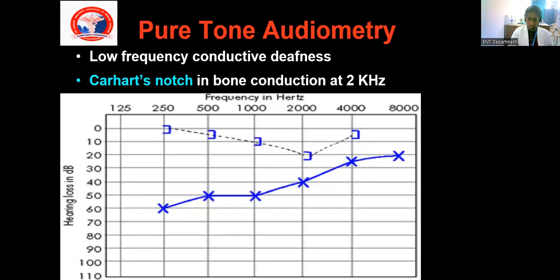For audiological testing, we perform pure tone audiometry. Since the patient has conductive hearing loss, air conduction is affected while bone conduction is usually normal, within 10 decibels. The lower frequencies such as 250 and 500 Hz are more affected than the higher frequencies. There is an air-bone gap, which is indicative of conductive deafness — the air-bone gap is above 15 decibels, typically above 20 decibels in otosclerosis.